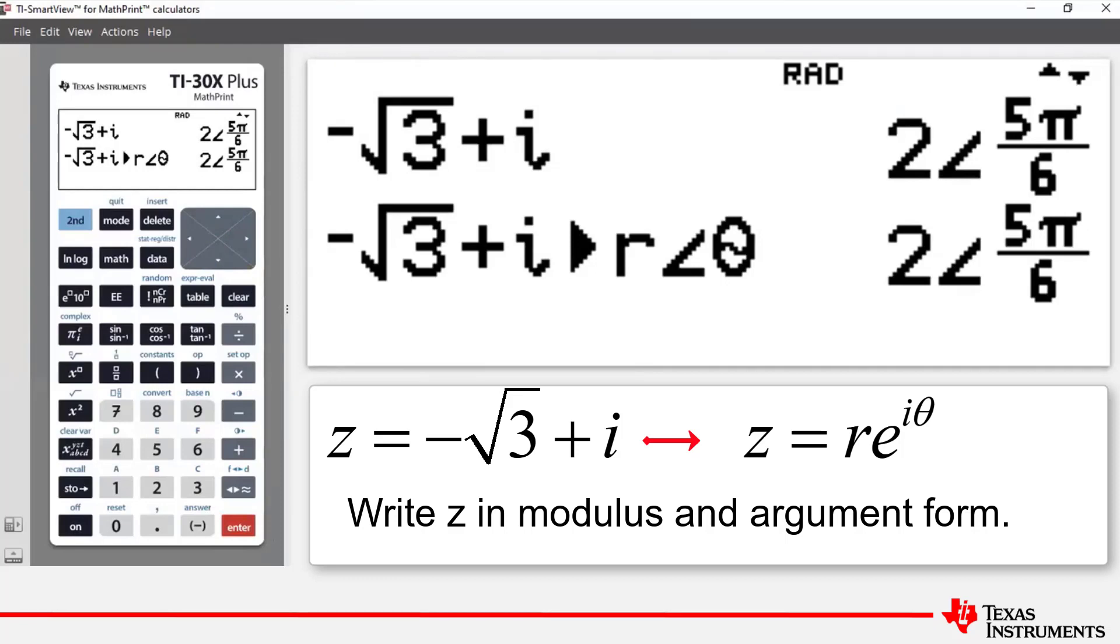Part B asks us to find z to the power of 6, giving our answer in the form x plus iy or Cartesian form. Now, unfortunately, we can't find z to the power of 6 directly.